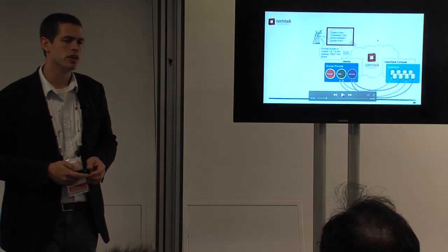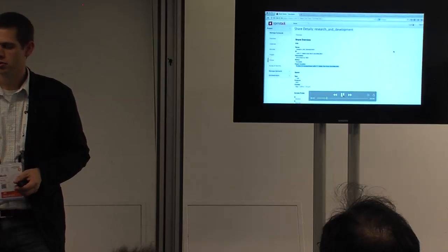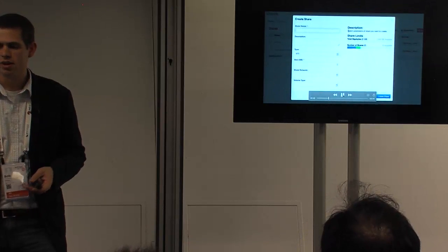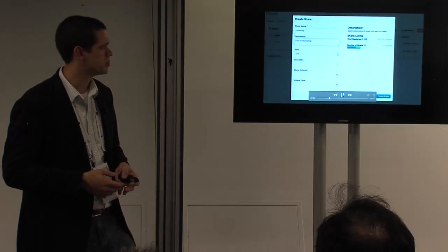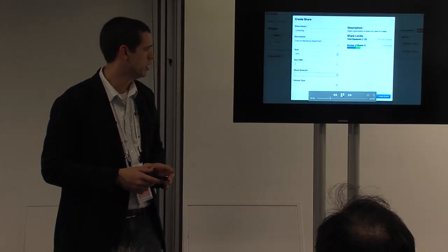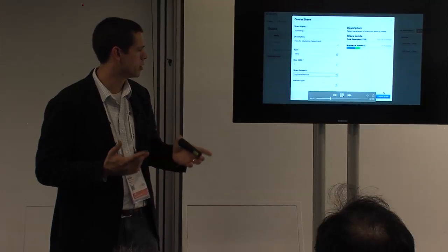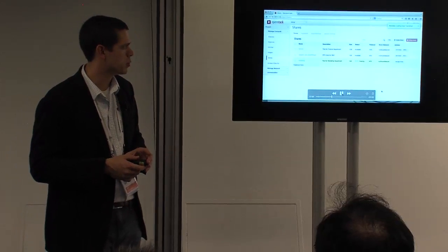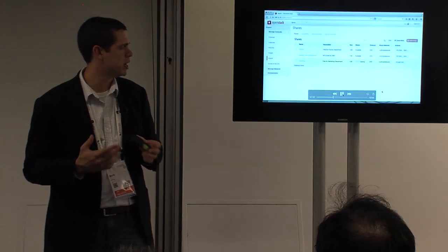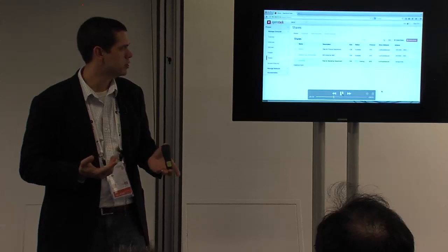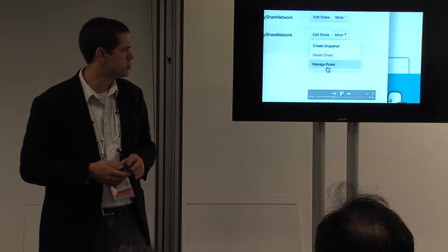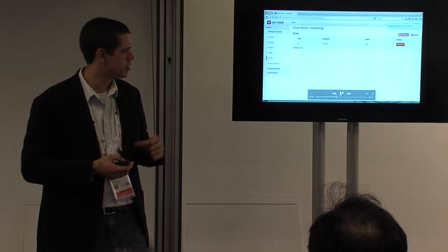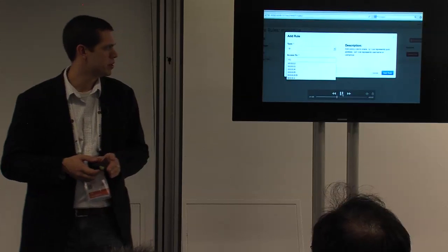We'll walk through creating a share in Horizon. It looks and feels just like creating a block volume — you specify the name, the storage protocol you want to use (which is either NFS or CIFS today, with new protocols being added in the future), the size, and the share network, which is the mapping between the Neutron network and the individual share. We issue that request into the REST API through Horizon, the share gets created and provisioned behind the scenes, it gets marked as available, and then we can drive down into the actual metadata for this new share and set the access rules.